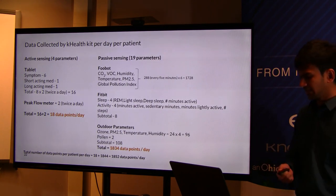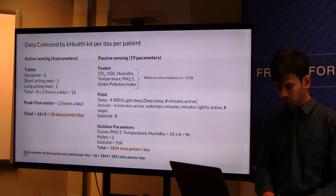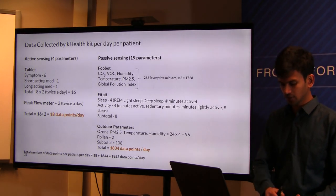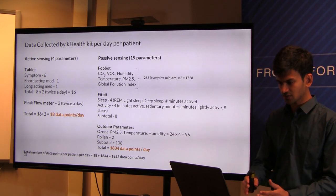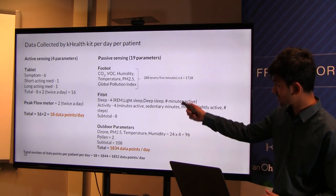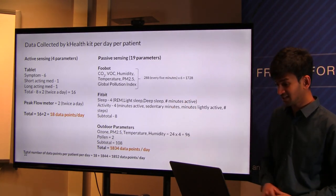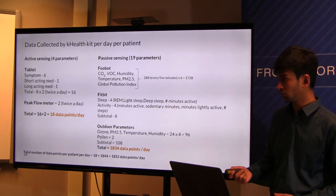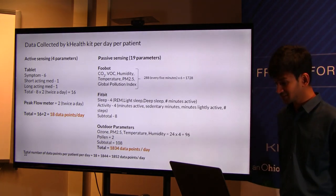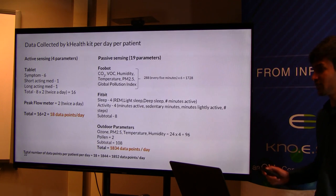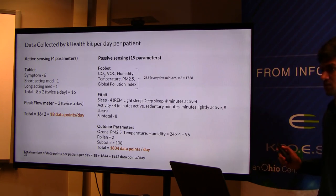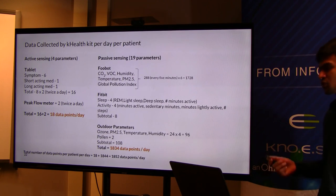To summarize, the K-Health kit consists of a tablet device which collects patient-reported parameters, and passively senses data from the Foobot, Fitbit, and also the peak flow meter — which is actively sensed. In total, there are about 1,852 data points collected per patient per day. This is huge, and when compared to a 30-day period, it could be enormous.